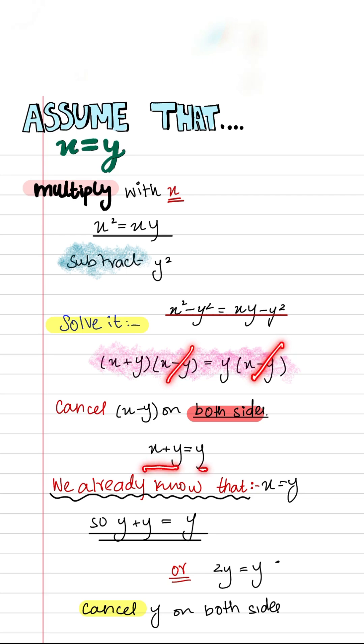Now x+y is equal to y. We already assumed that x is equal to y, so we are substituting x as y. So y+y is equal to y. In other words, 2y is equal to y.